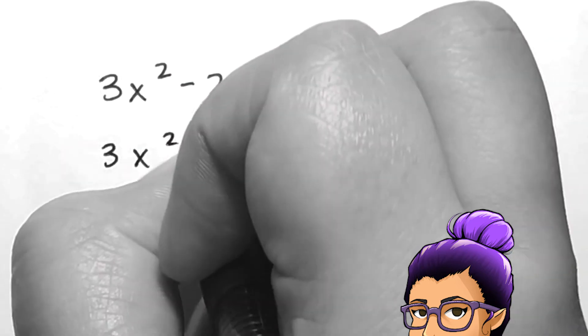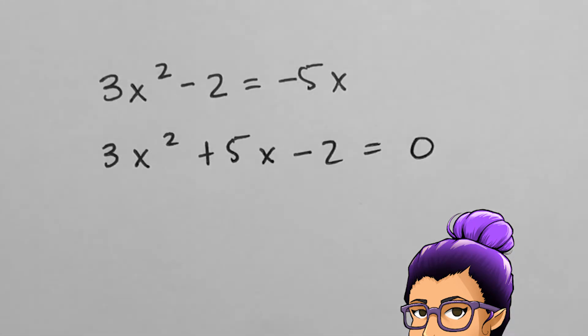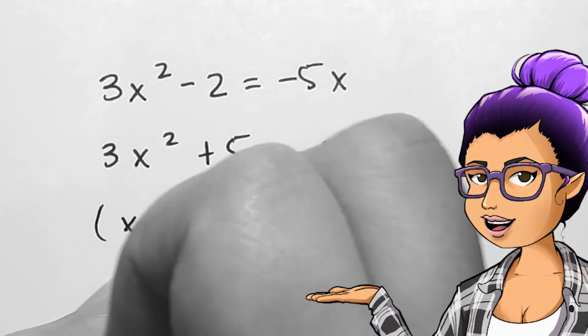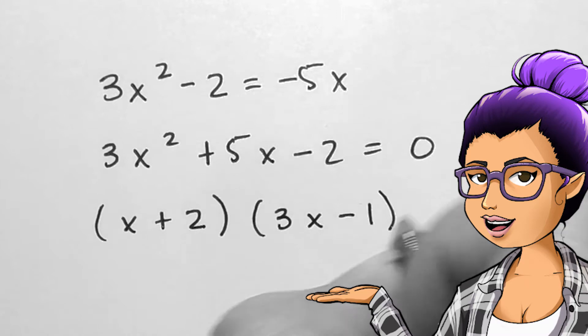On the factoring video, we saw that 3x squared plus 5x minus 2 factored out into x plus 2 times 3x minus 1. This means that x plus 2 equals 0 and separately, 3x minus 1 equals 0.